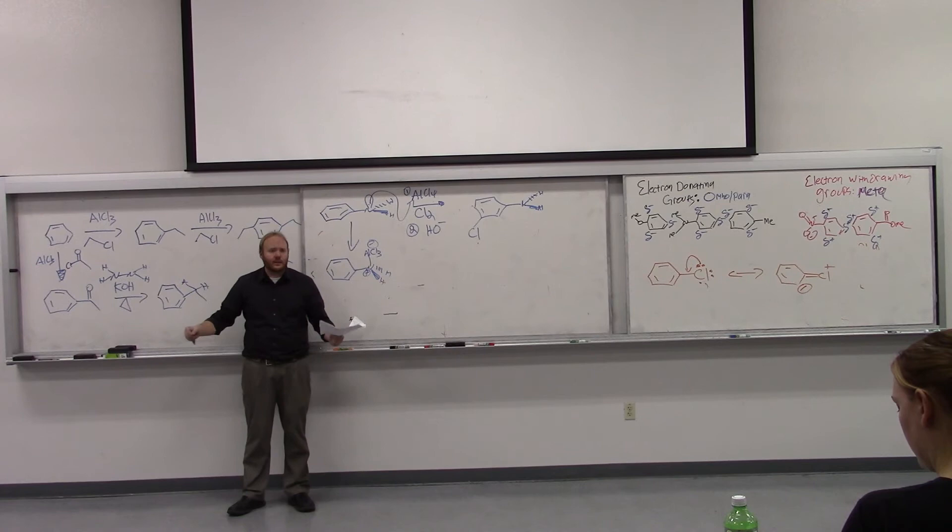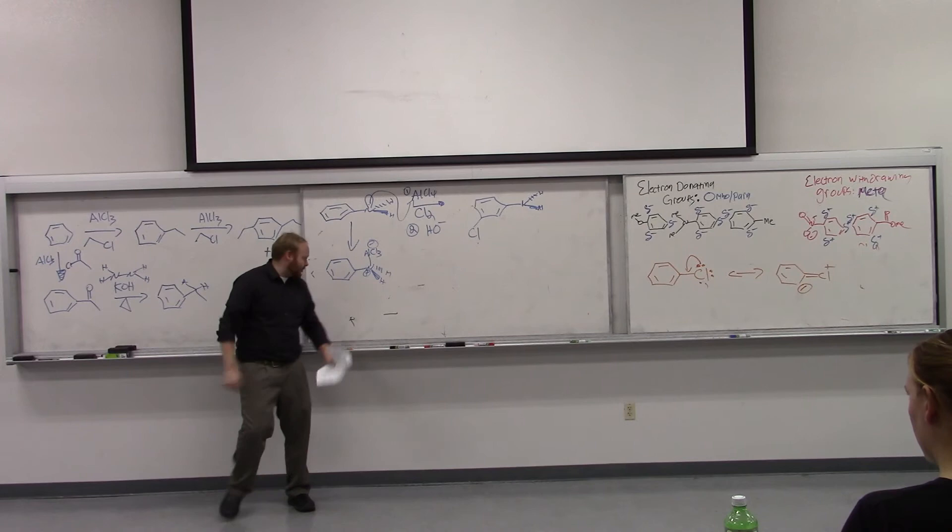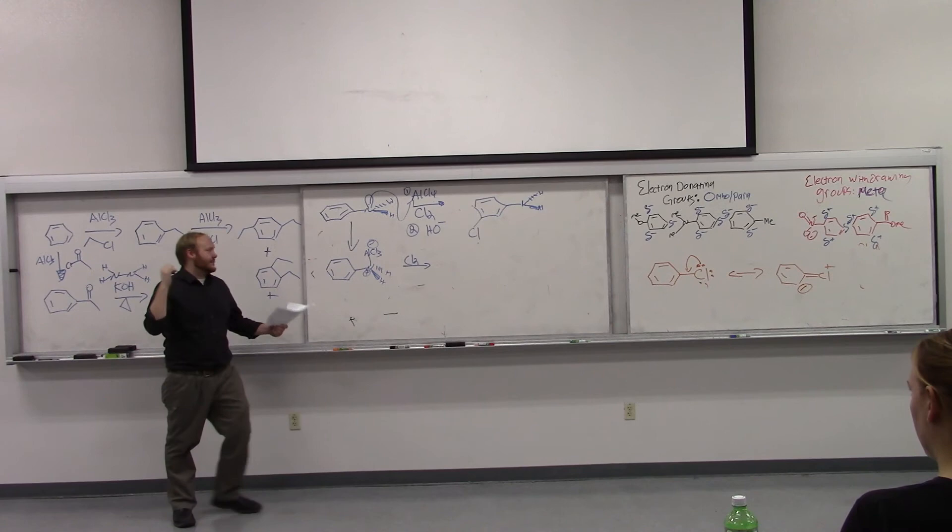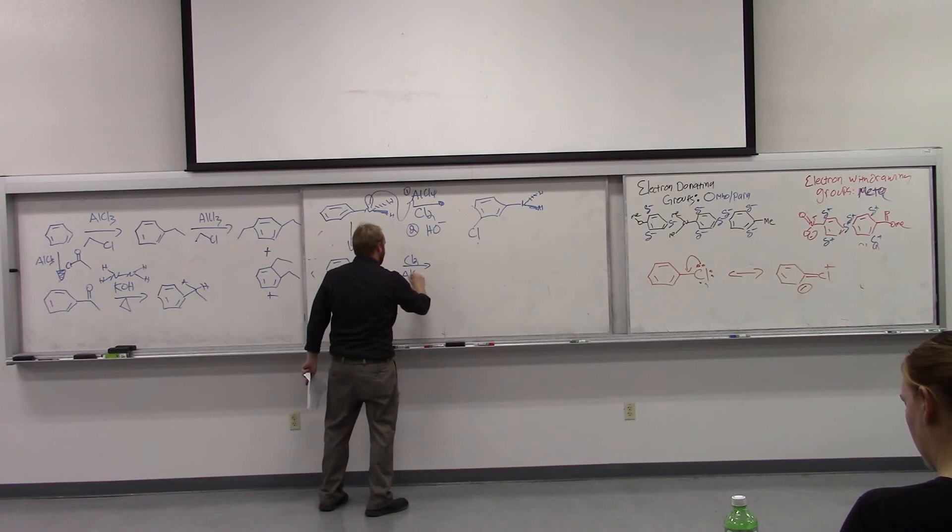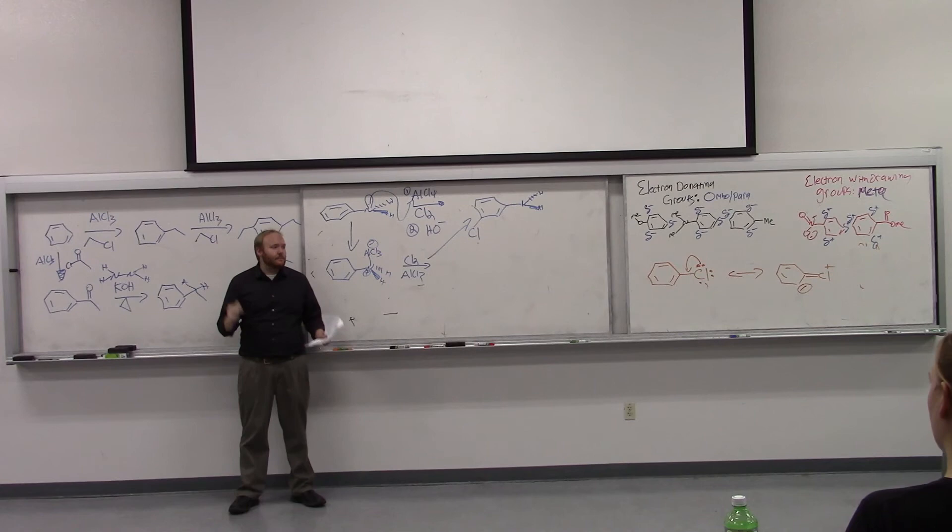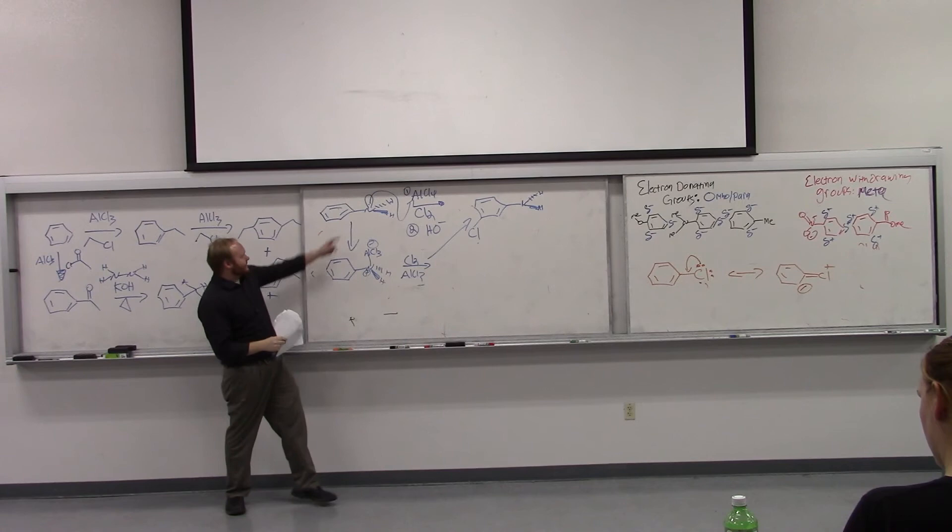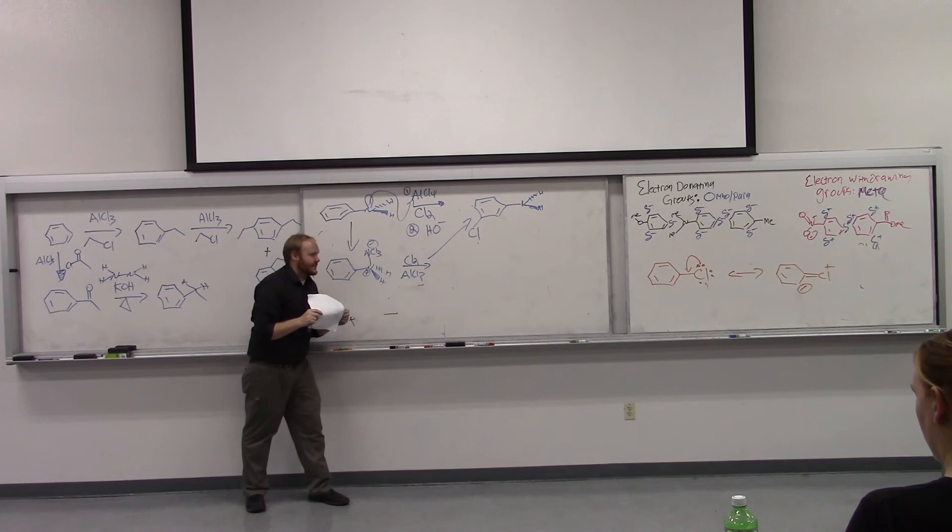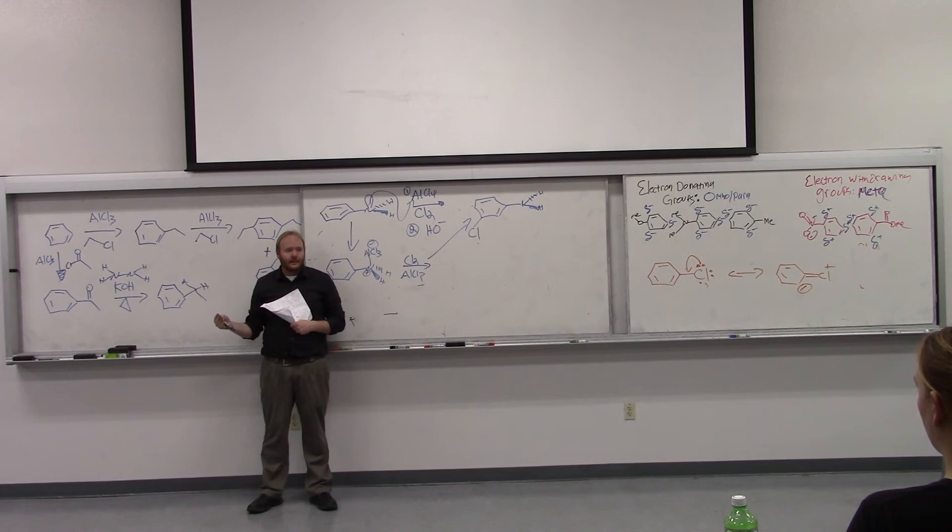They're so reactive that they don't just give electron density into here. They also get themselves and the actual nitrogen atom attack the acid, either the Lewis or Bronsted acid. And this gives us an ammonium salt with a positive charge on the nitrogen. So now that you have the positive charge on the nitrogen, is it an electron-donating or an electron withdrawing group? It's an electron withdrawing group. It's an electron withdrawing group, exactly.